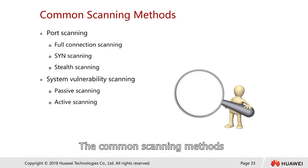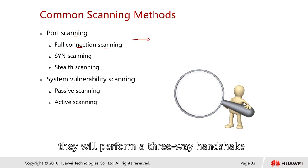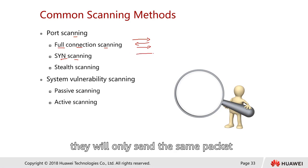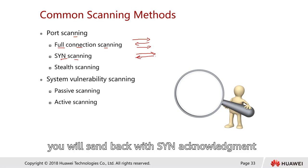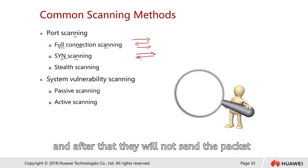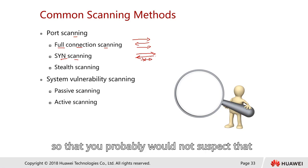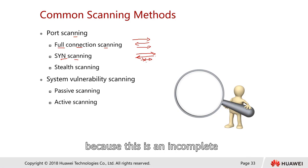Common scanning methods include full connection scanning, where they perform a full three-way handshake, and SYN scanning, where they only send a SYN packet. If a port responds with SYN-ACK, the attacker does not send the third packet, so you may not suspect that someone tried to connect — because the connection is incomplete.